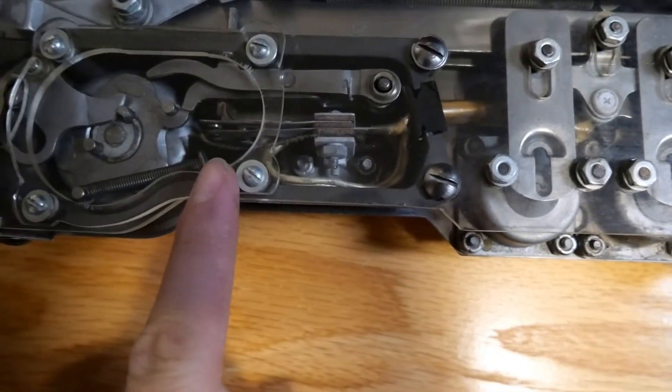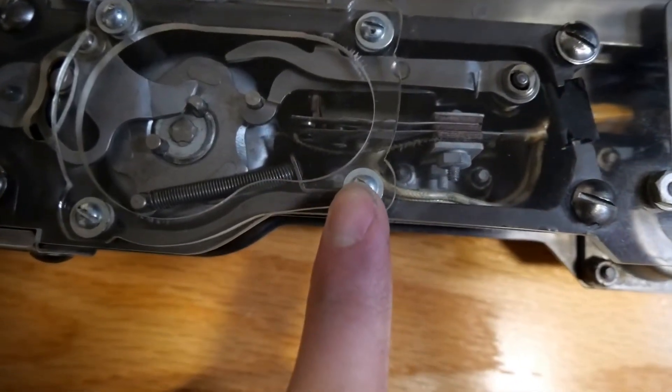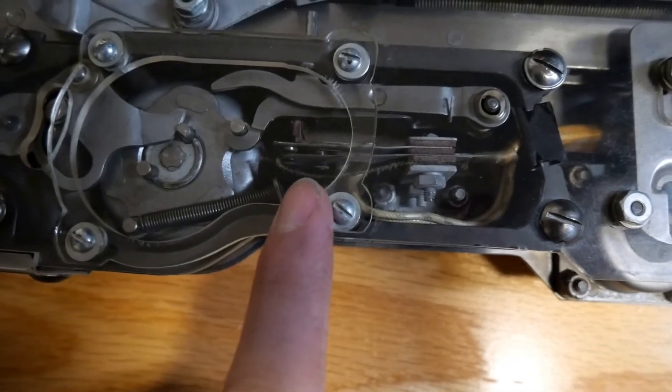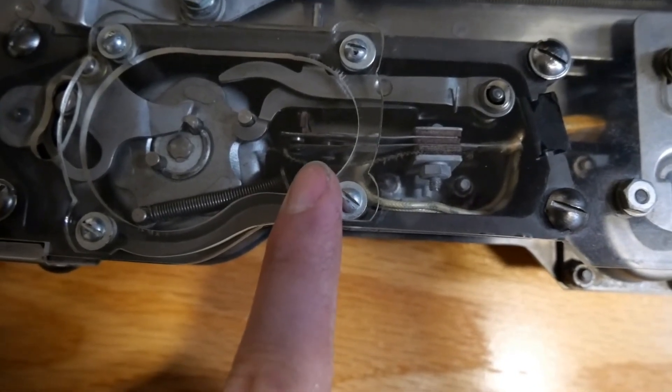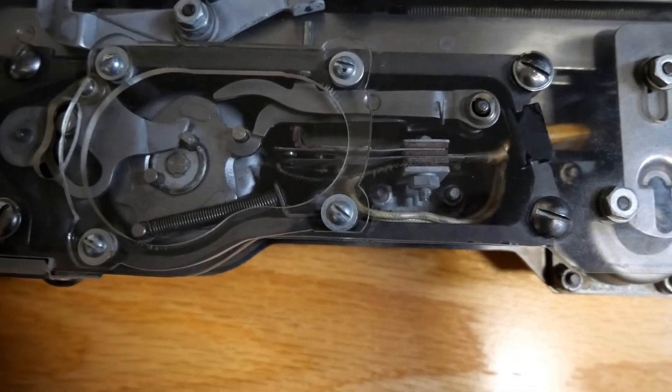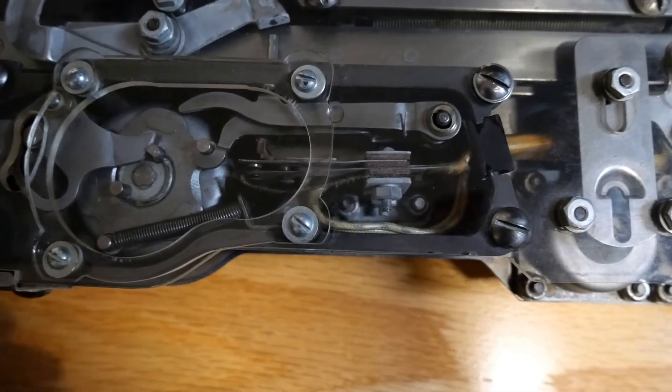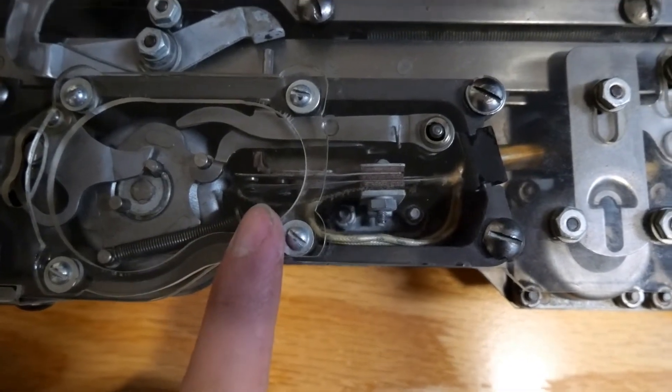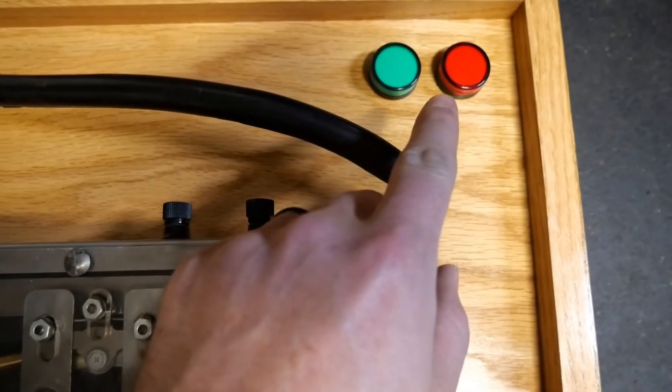Now when that pawl moves up, there are contacts in here. These contacts touch and activate when the bomb rack is armed or released, and then it gives the pilot feedback as to whether the bomb actually dropped or not. And these contacts are what controls the LEDs up here.